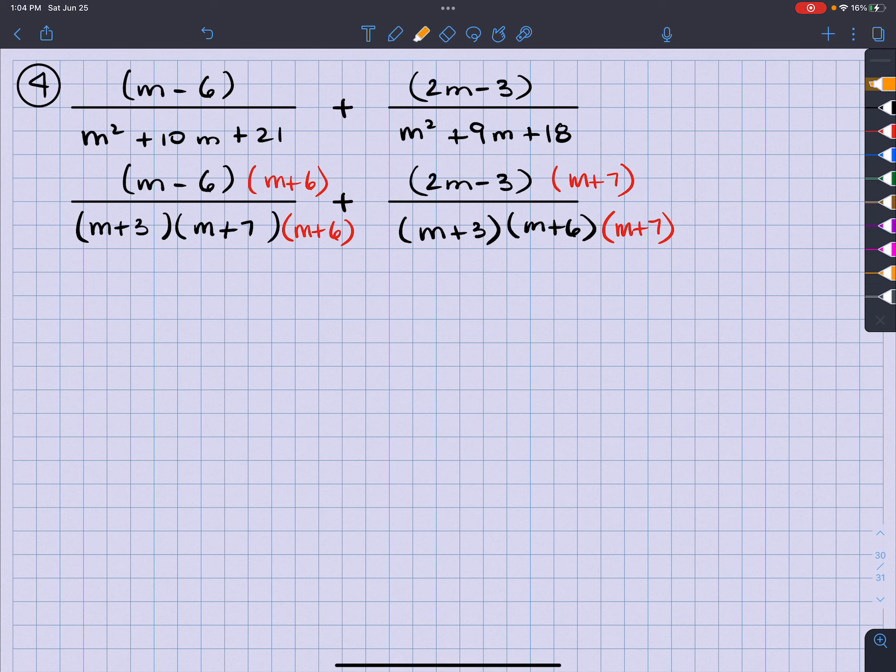Now let's look at the denominator, M plus 3, M plus 7, M plus 6. Yes, got it all. Over here, M plus 3, M plus 7, M plus 6, same thing, got them all. Great.